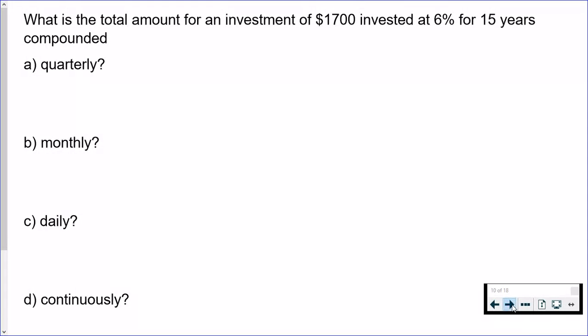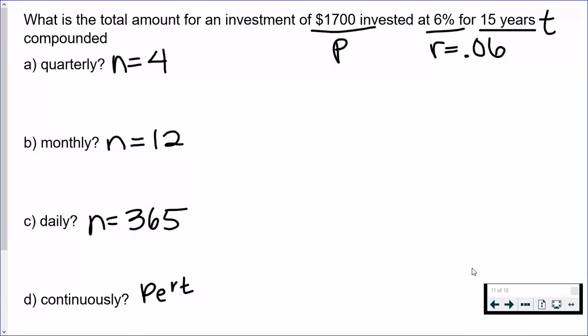amount of time, 15 years, is t. Now if it's compounded quarterly, n is 4; if it's compounded monthly, n is 12; if it's compounded daily, n is 365. So for those first three, you're going to use that first compound interest formula. For the last one, we're going to use PERT.